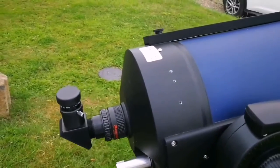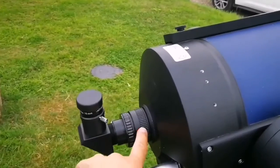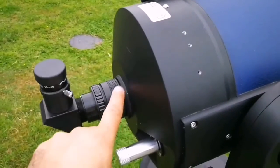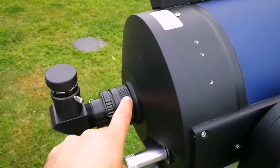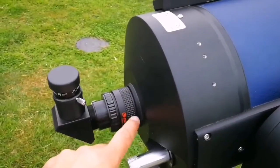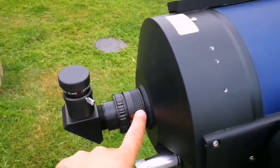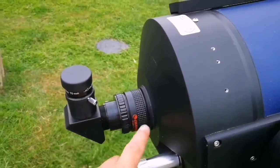was that I put this Celestron focal reducer. You can use Meade, but the Meade one I noticed shows the secondary mirror too much. This Celestron one is alright, and if you use Antares that will be also alright.